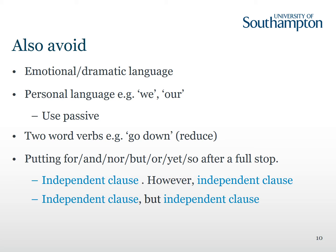Some other points briefly to mention about informality are emotional or dramatic language such as 'luckily' or 'unfortunately', or personal language such as 'we' and 'our'. However, take care with this as increasingly personal language is being used, so try to observe the writing around you. Another point is two-word verbs such as 'go down', which would often be written as a single word with the same meaning — 'reduce'. Another is starting sentences with coordinating conjunctions — the short linking words such as for, nor, but, or, yet, so — after a full stop.